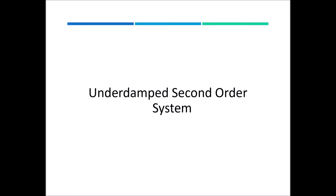Assalamu alaikum students. In today's lecture we will be discussing the underdamped second order system. In that we will see its specifications: settling time, peak time, overshoot, percentage overshoot, and rise time. We will also be discussing how we relate these specifications to the pole locations. So we start our discussion with the underdamped second order systems.